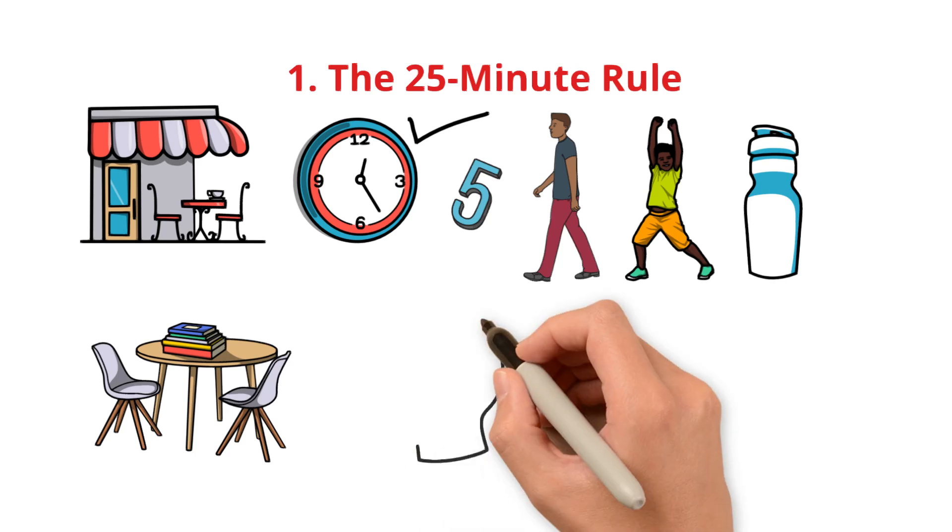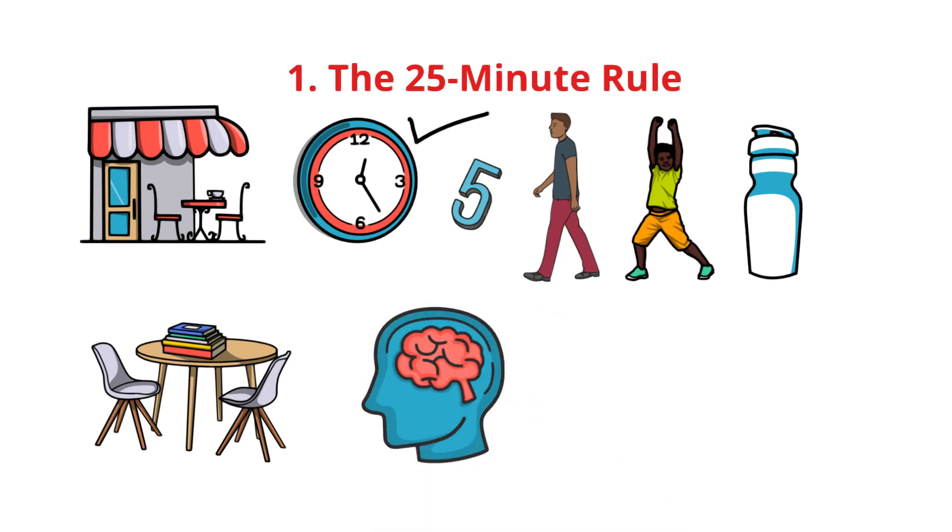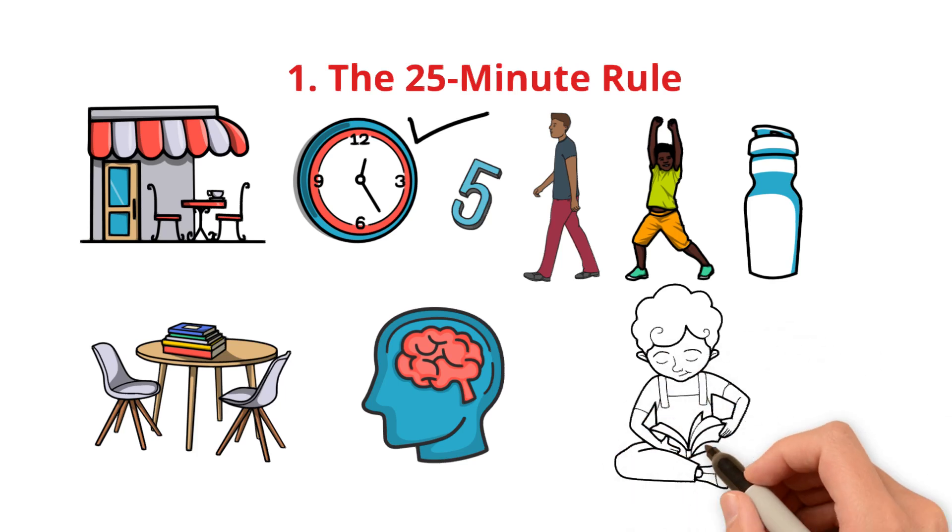Why does this work? Your brain gets dopamine rewards for completing cycles, keeping you motivated and avoiding burnout. Sounds simple, but most students never use it correctly. Try it for one session today, and you'll feel the difference instantly. But wait. What if distractions keep ruining your focus? Let's fix that in tip 2.